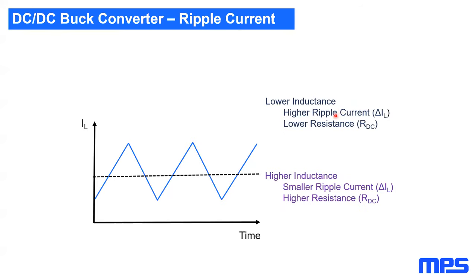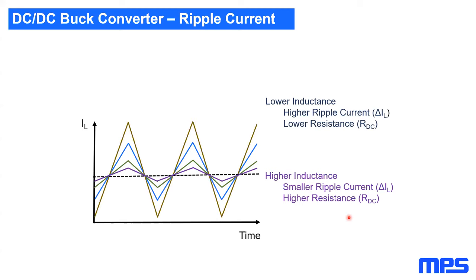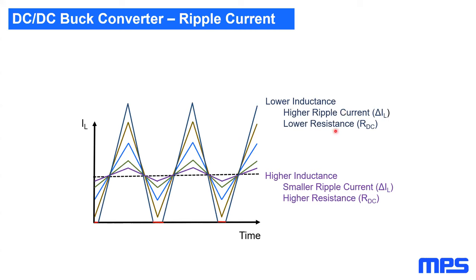When selecting inductance and going higher, ripple current becomes smaller, but higher inductance also increases resistance because more turns are needed to reach that value. Going to lower inductance, ripple current goes higher. Decreasing further into very low inductance values can push the converter into discontinuous conduction mode. Lower inductance means higher core losses but lower copper losses — so the goal is to find a balanced inductor. Remember that higher ripple current will increase AC losses.